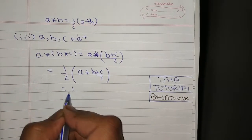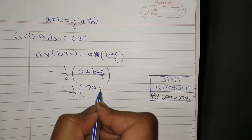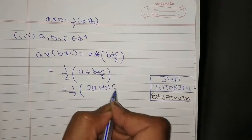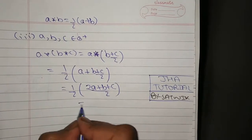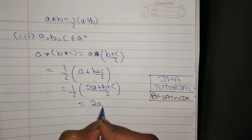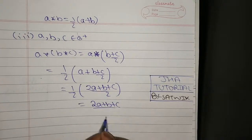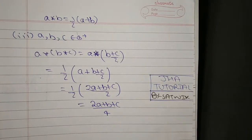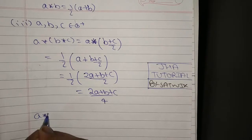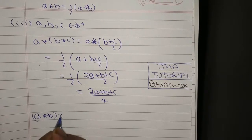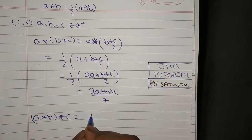Now solving this: ½ × (2a + b + c)/2, taking LCM, which gives (2a + b + c)/4. So (a★b)★c = (2a+b+c)/4.